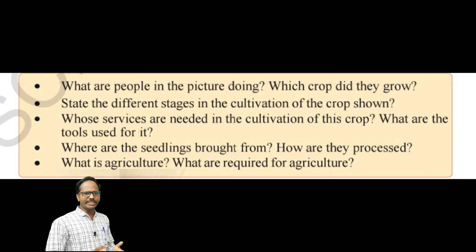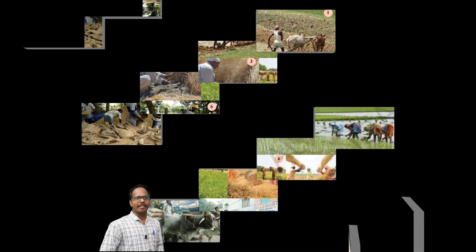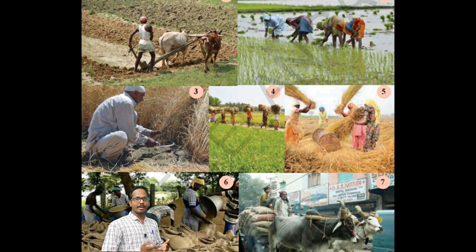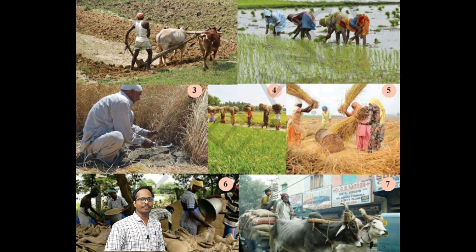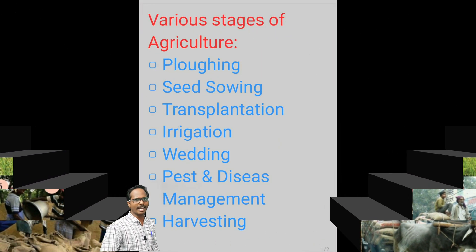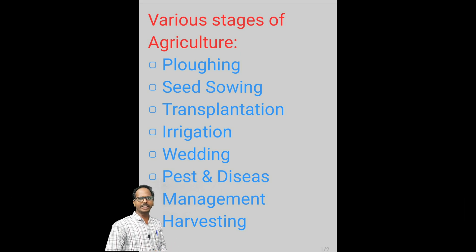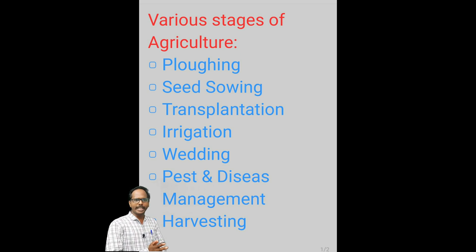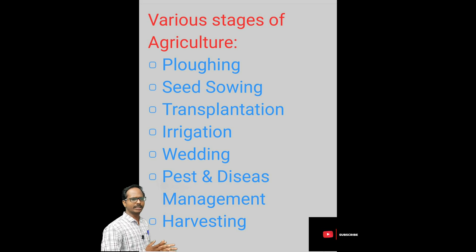Whose services are needed in the cultivation of this crop? There are different stages involved in agriculture, right from the plowing of land to the final harvesting of crops. Plowing means to dig and turn over a field with the help of a plow so that the soil becomes loose.